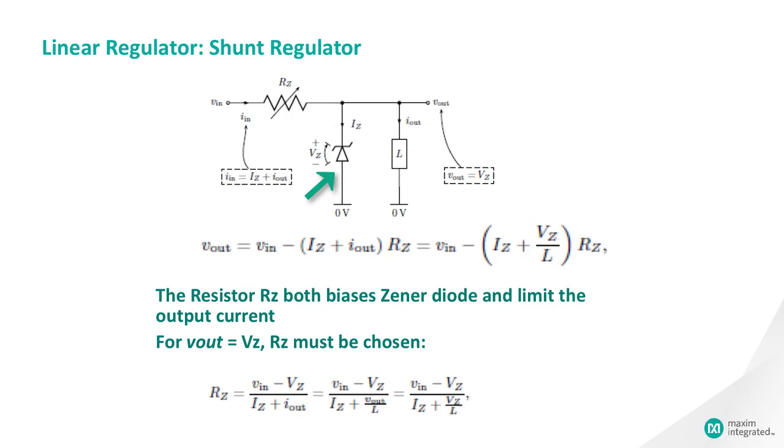This regulator is used for very simple low-power applications where the currents involved are small and the load is permanently connected across the Zener diode, such as a voltage reference or voltage source circuits.